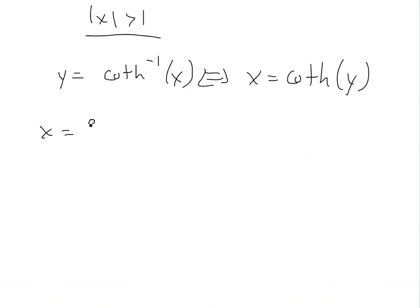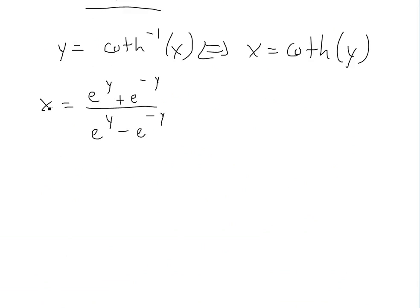Plugging in the definition we found earlier, but replacing x's with y's, we get x = (e^y + e^(-y)) / (e^y - e^(-y)). Now we can multiply both sides by the denominator to get it out of the fraction. So we get x(e^y - e^(-y)) = e^y + e^(-y).